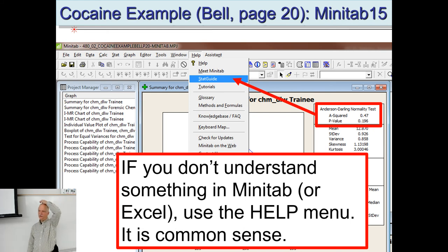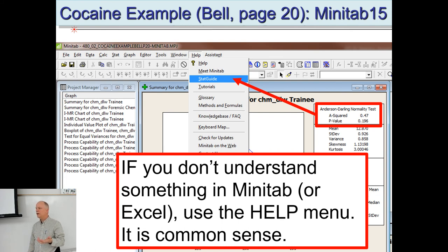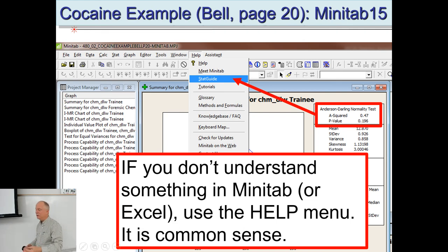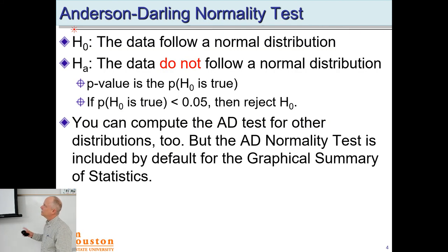I wasn't sure what the Anderson-Darling normality test was, so I went to the help menu. I've found that Excel has put decent effort into their help menus — they'll talk about functions and give examples. Minitab is even better; they have a stat guide that's like a whole statistics textbook built into the software. So go check out the help — it's a really good resource.